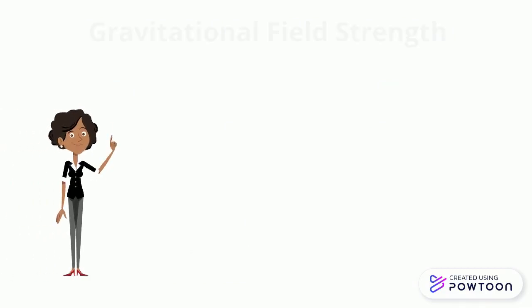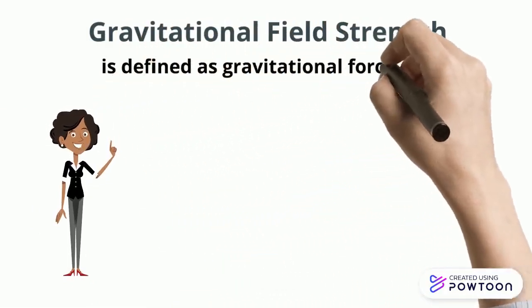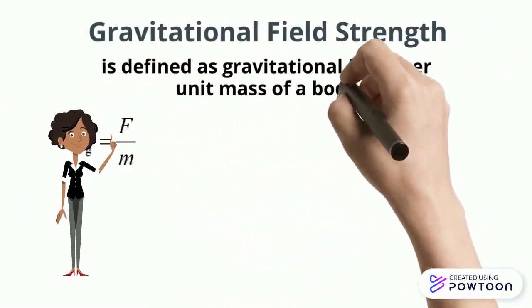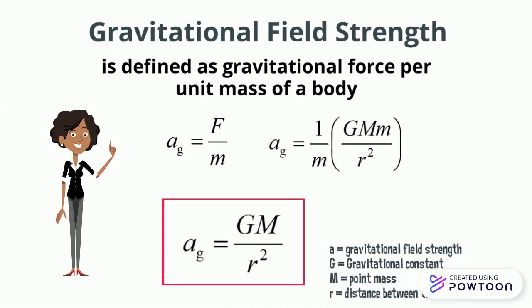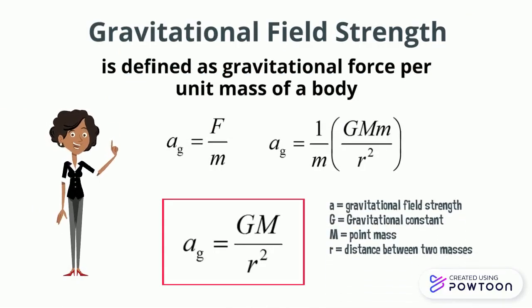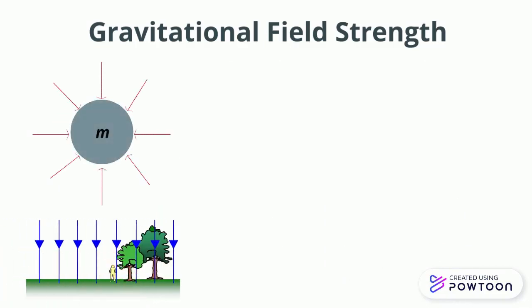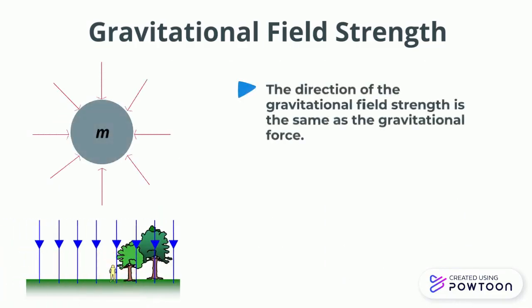Gravitational field strength is defined as the gravitational force per unit mass of a body. Mathematically, we can write down Ag equal to Gm over R squared. The direction of the gravitational field strength is the same as the gravitational force. A vector quantity, the unit is meter per kilogram or meter per second squared, also known as gravity.